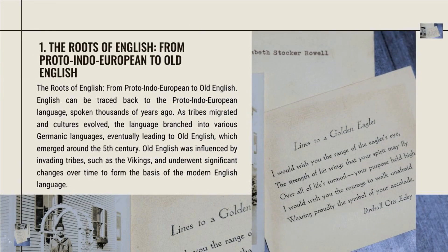English can be traced back to the Proto-Indo-European language, spoken thousands of years ago. As tribes migrated and cultures evolved, the language branched into various Germanic languages, eventually leading to Old English, which emerged around the 5th century. Old English was influenced by invading tribes such as the Vikings, and underwent significant changes over time to form the basis of the modern English language.